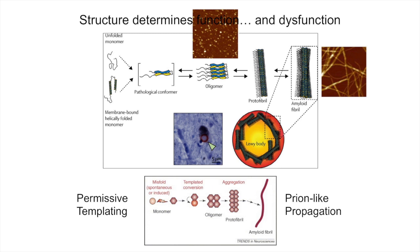This is called atomic force microscopy. I know nothing about it, but it's just to show you that fibrils look quite different from oligomers. You can imagine how this different structure can have consequences on function.